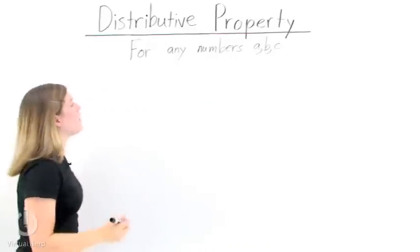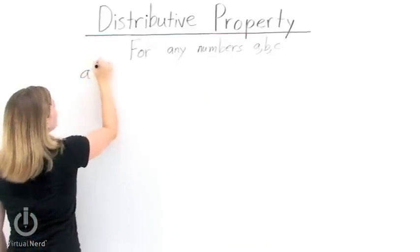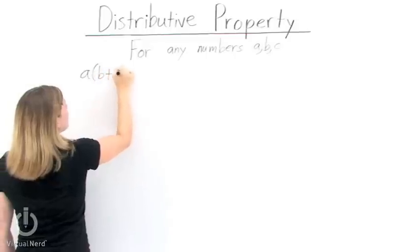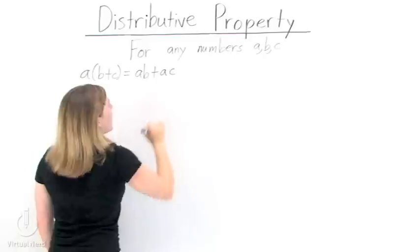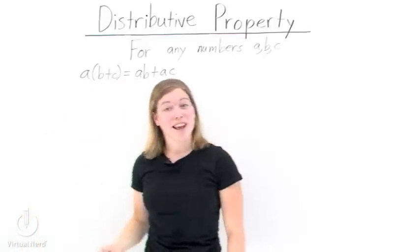Now say we take three numbers, a, b, and c. If we multiply a on the outside of the quantity b plus c, we can use the distributive property to distribute in that a to get a times b plus a times c.